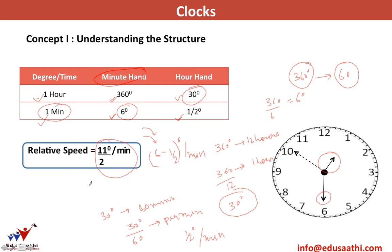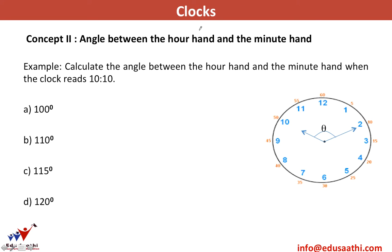If you have a problem understanding relative speed, please take up the lecture on Time, Speed, and Distance in the Quantitative Ability section. The key takeaways from this slide: in 1 minute the minute hand moves 6 degrees, the hour hand moves 0.5 degrees, and the relative speed is 11/2 degrees per minute.